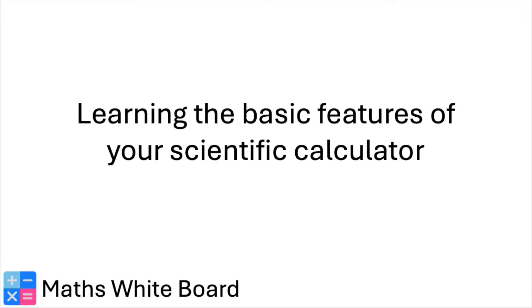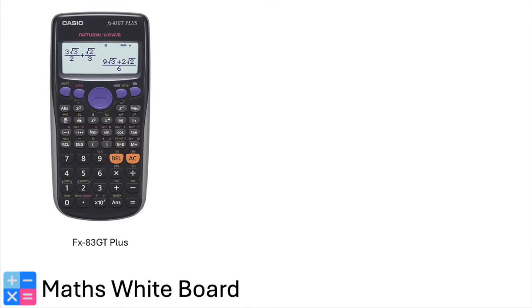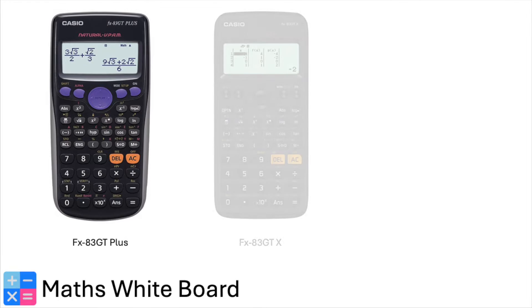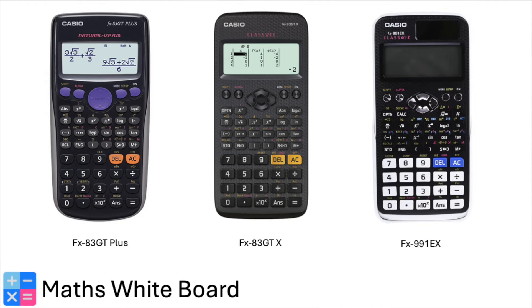Welcome to this training video on how to use the basic features of your scientific calculator. Three commonly found calculator models in schools include the Casio FX-83GT+, the Casio FX-83GTX, and the specific one featured in this video tutorial, the Casio FX-991EX. All of these calculators work in a similar way. If you happen to have the newer Casio FX-991CW, stay tuned for a separate video where I'll address its functionalities.